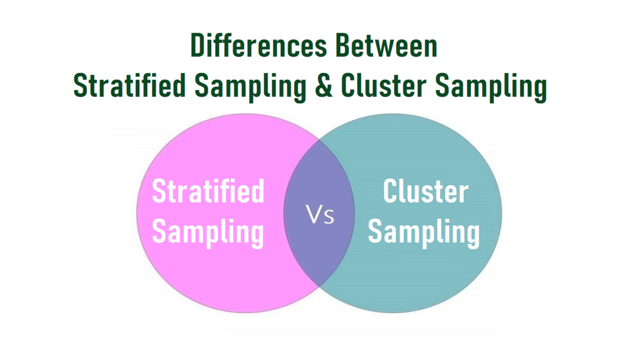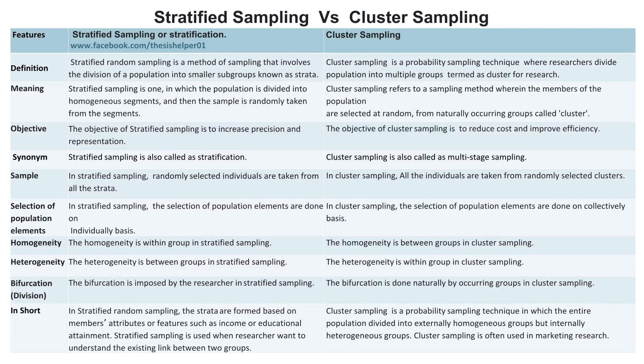Differences between stratified sampling and cluster sampling. Stratified random sampling is a method of sampling that involves the division of a population into smaller subgroups known as strata. Whereas, cluster sampling is a probability sampling technique where researchers divide the population into multiple groups termed as clusters for research.